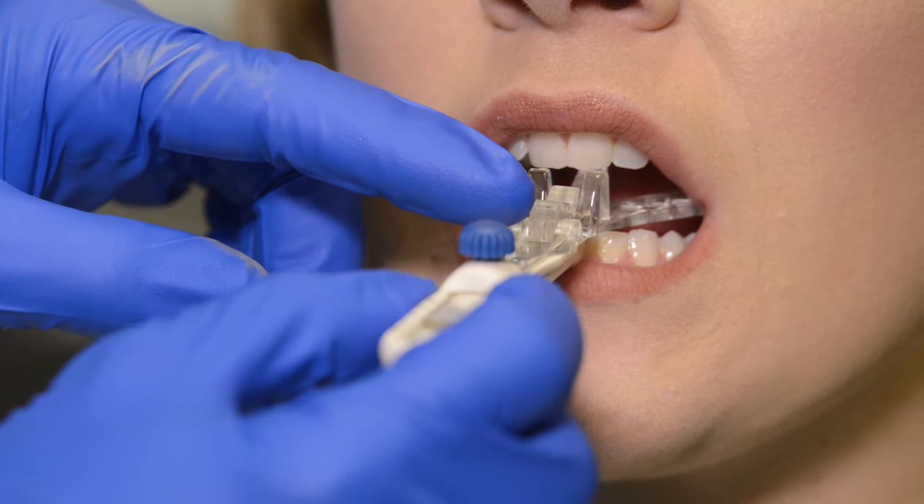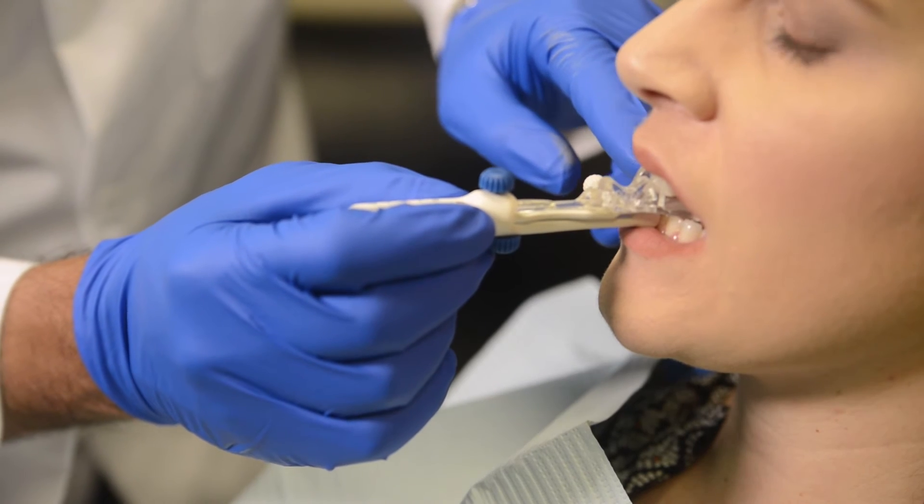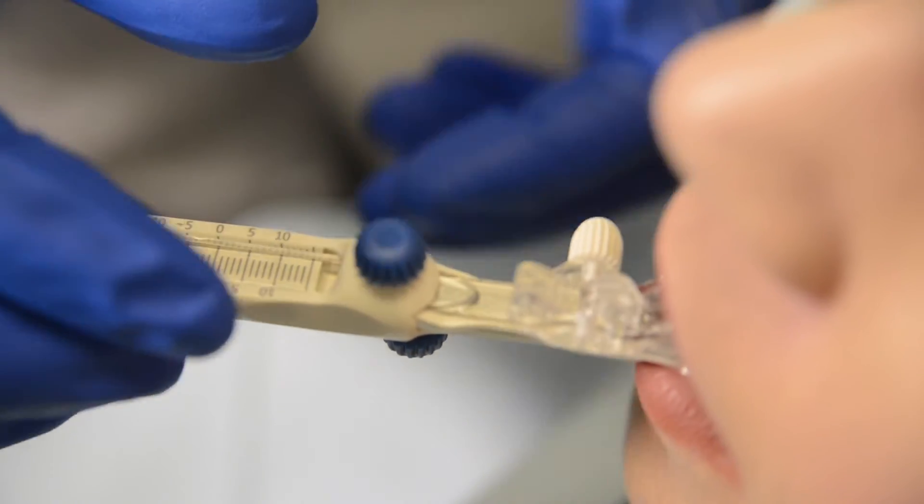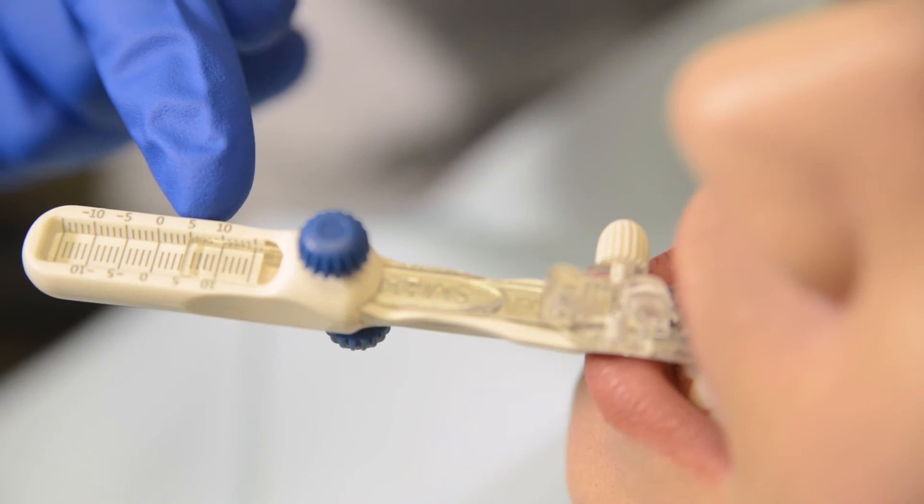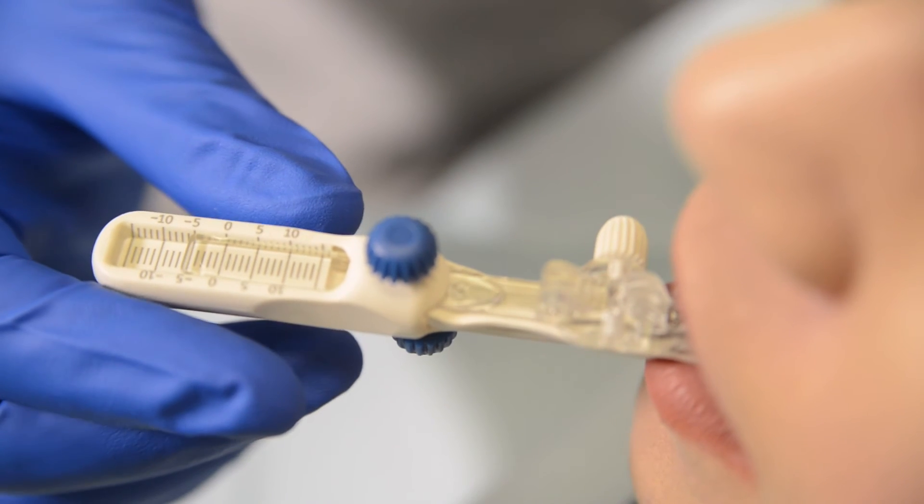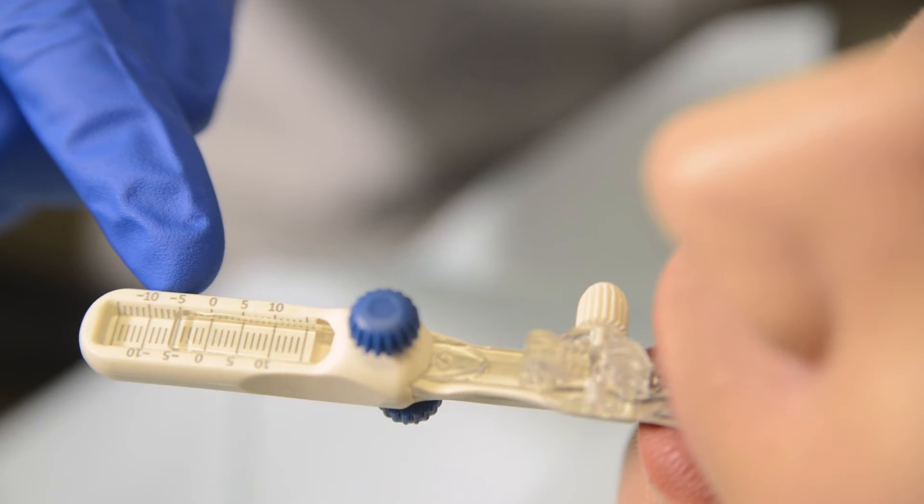Instruct patient to gently close onto bite fork so that upper anteriors close completely into ramp and contact guides. Tighten upper screw to secure bite fork and loosen ramp screw. Move ramp to contact upper anteriors. Tighten ramp screw to secure ramp.